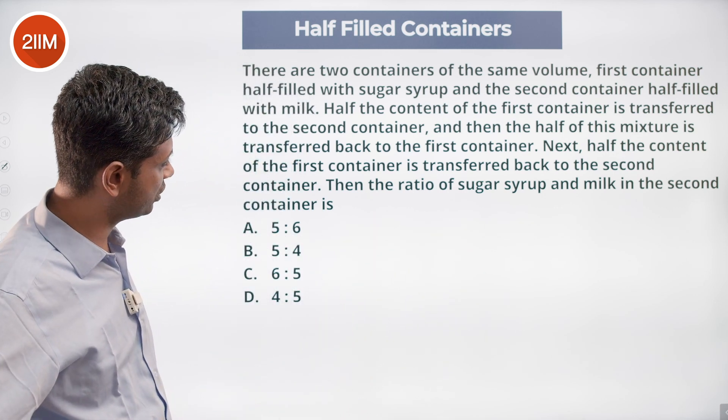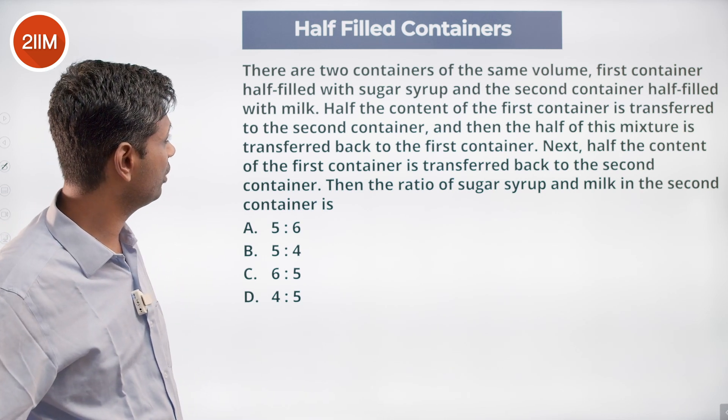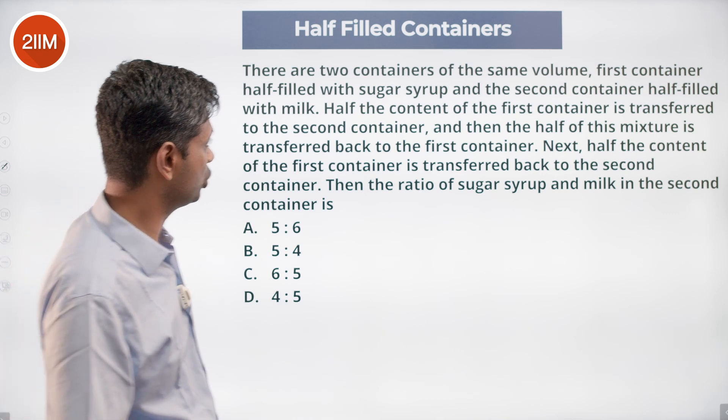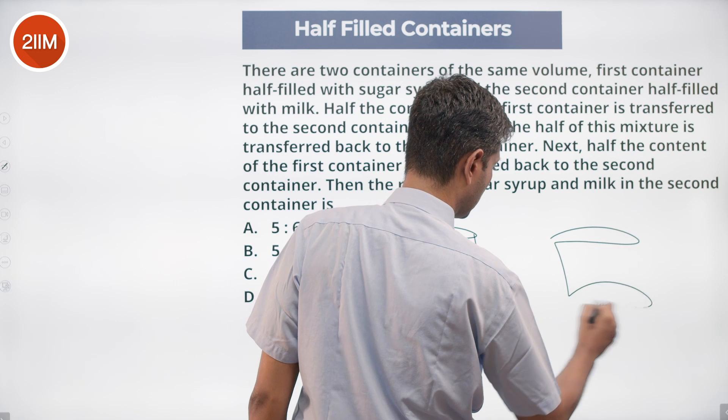Then the ratio of sugar syrup and milk in the second container is... Two containers, the same volume, half filled with sugar syrup and half filled with milk. Container 1, container 2.